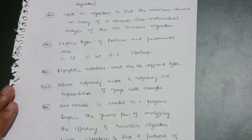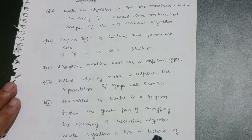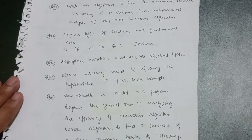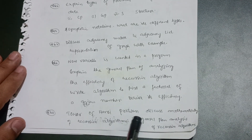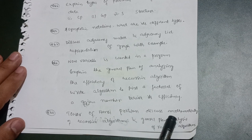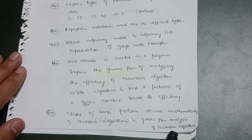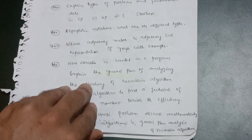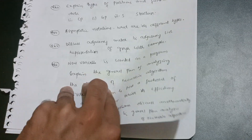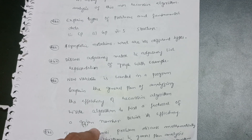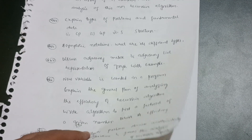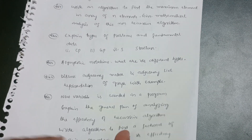Seventh: write an algorithm to find the factorial of a given number and derive its efficiency. Eighth: Tower of Hanoi problem — discuss mathematically recursive algorithms and the general plan for analysis of recursive algorithms. These are the eight important questions for Module 1 that you have to go through.